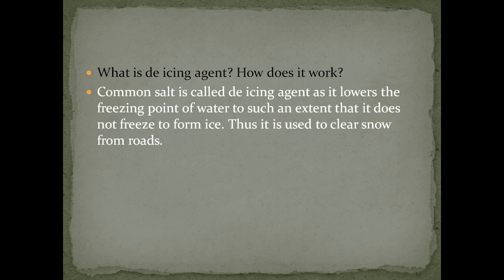What is a de-icing agent? How does it work? Common salt is called a de-icing agent as it lowers the freezing point of water to such an extent that it does not freeze to form ice. Thus it is used to clear snow from roads.